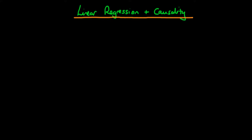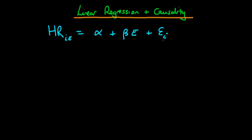In order to talk about causality in regard to linear regression, we're going to make an assumption and continue the example from the last video: the effect of exercise level on an individual's resting heart rate. We assume that the potential resting heart rate of individual I who exercises an amount E is linear in E — specifically, alpha plus beta times E plus epsilon_I, where epsilon_I is an error term capturing all other factors affecting potential resting heart rate.